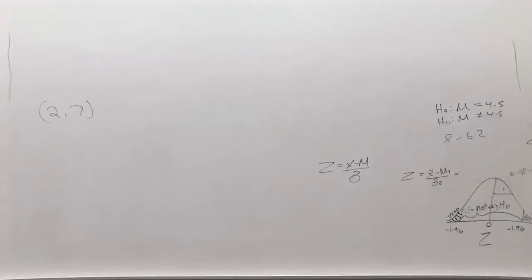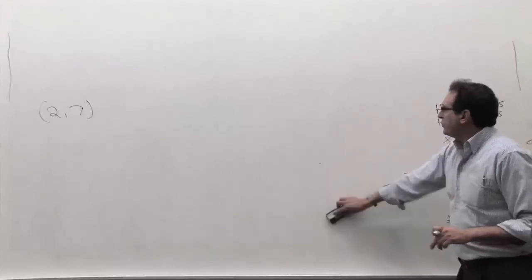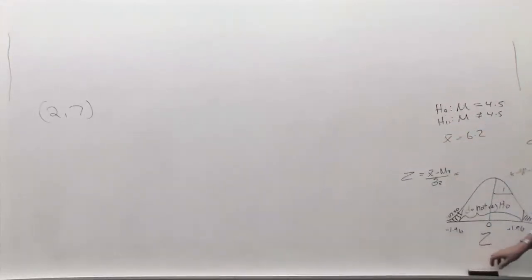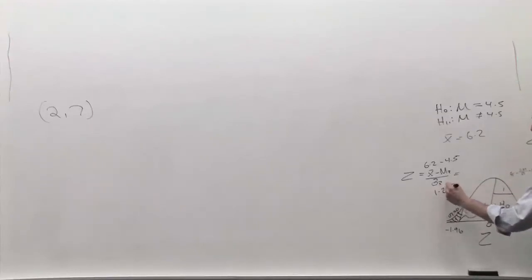Now let's do it by the shortcut method. The shortcut method says take your data and convert it to a z-score. Why would you convert it to a z-score? If you're just coming in the middle here, you'd have no idea why, but hopefully now you understand why we're doing that. This data is 6.2, and this number is a made-up number. The ideal number is 4.5. The sigma of x-bar by this little side formula, sigma over root n, is 1.28. And what does this come out to? Somebody do this calculation.